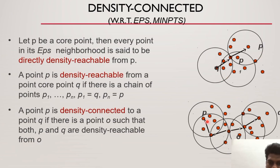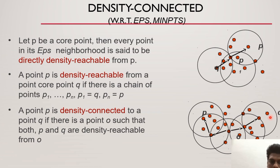Density reachable and density connected: what do we mean by density reachable? Here we have point P and point Q. Point P is density reachable from a core point Q through a chain of points P1, P2 up to Pn. That is density reachable. For density connected, a point P is connected to point Q through a point O, so P and Q are density reachable through the point O.